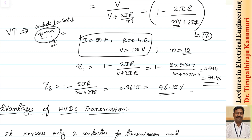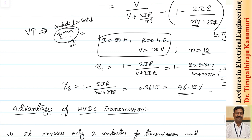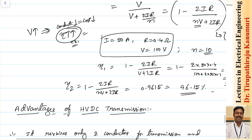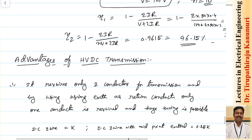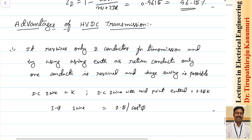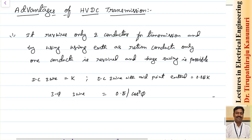There are some limitations in generating high voltage DC, because high voltage cannot be generated easily due to the commutation problem as well as the insulation problem, and DC cannot be stepped up or stepped down easily. These are the limitations of DC.